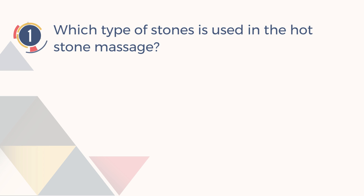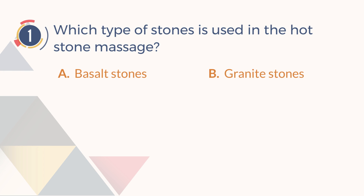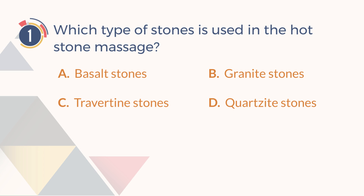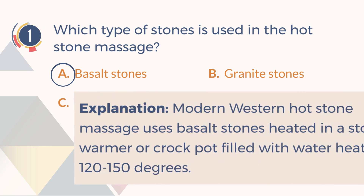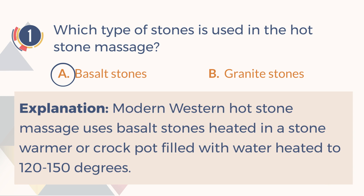Number 1. Which type of stones is used in the hot stone massage? A. Basalt stones. B. Granite stones. C. Travertine stones. D. Quartzite stones. The answer is A, basalt stones. Modern western hot stone massage uses basalt stones heated in a stone warmer or crock pot filled with water heated to 120 to 150 degrees.